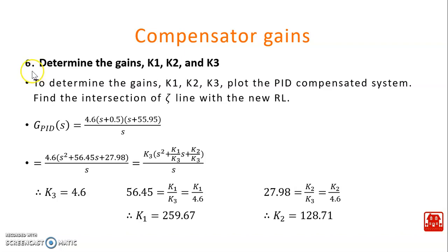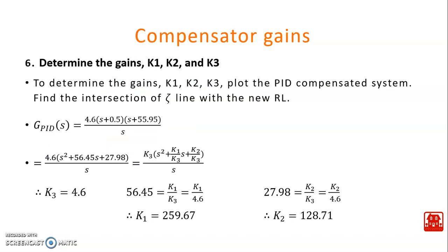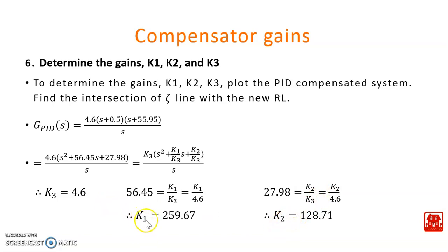The next step is to determine the gains K1, K2, and K3. From the compensated PID transfer function, we equate terms with the standard PID formula. From this, K3 is determined first and equals 4.6. Then K1 over K3 equals 56.45, from which K1 is calculated. The last term gives K2 over K3 equal to 27.98, from which K2 is determined. All three gains — proportional, integral, and derivative — are now known.